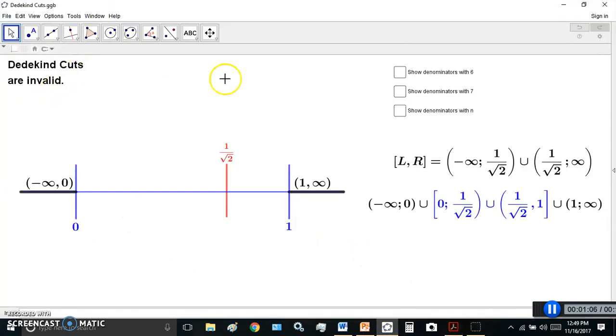So Dedekind cuts are actually invalid. That is the short and sweet of it. And why are they invalid? Well, first of all, what are they? A Dedekind cut is supposed to be a unique representation of some real number.